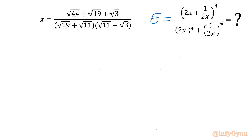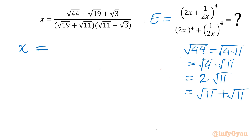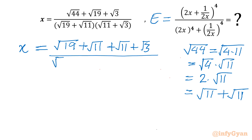Let us get started with x itself. We write x equal to square root of 44, and we factorize 44 as 4 times 11. Using properties of radicals, we write √4 × √11, which gives 2√11, so √44 = √11 + √11. We rewrite the numerator as √19 + √11 + √11 + √3, with the denominator unchanged: (√19 + √11)(√11 + √3).